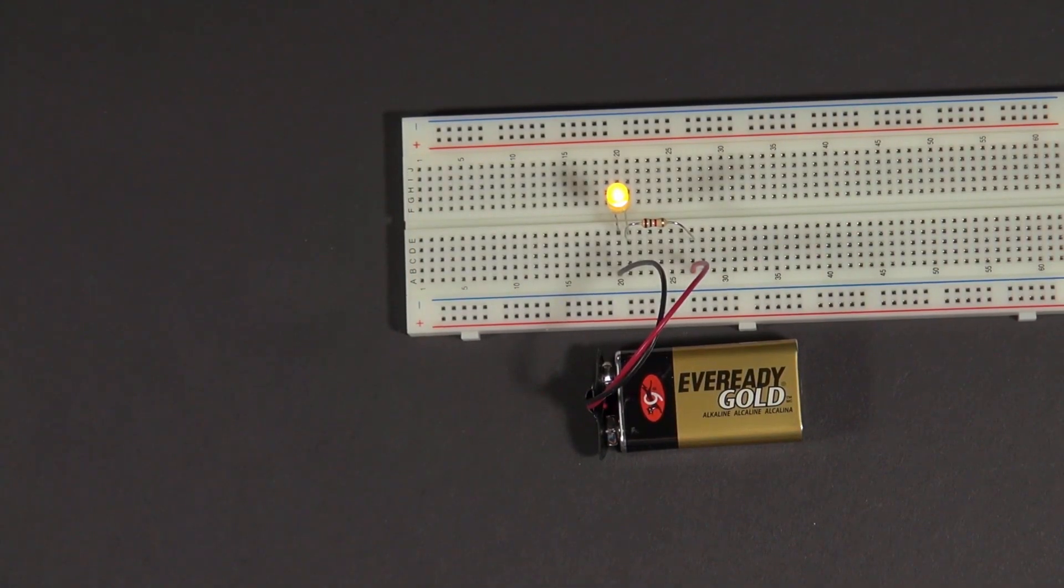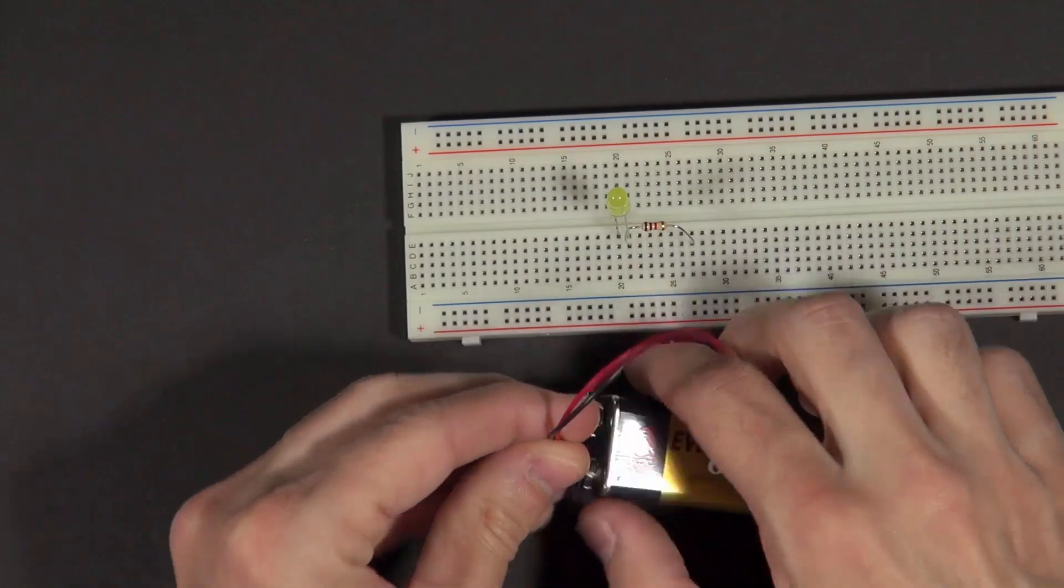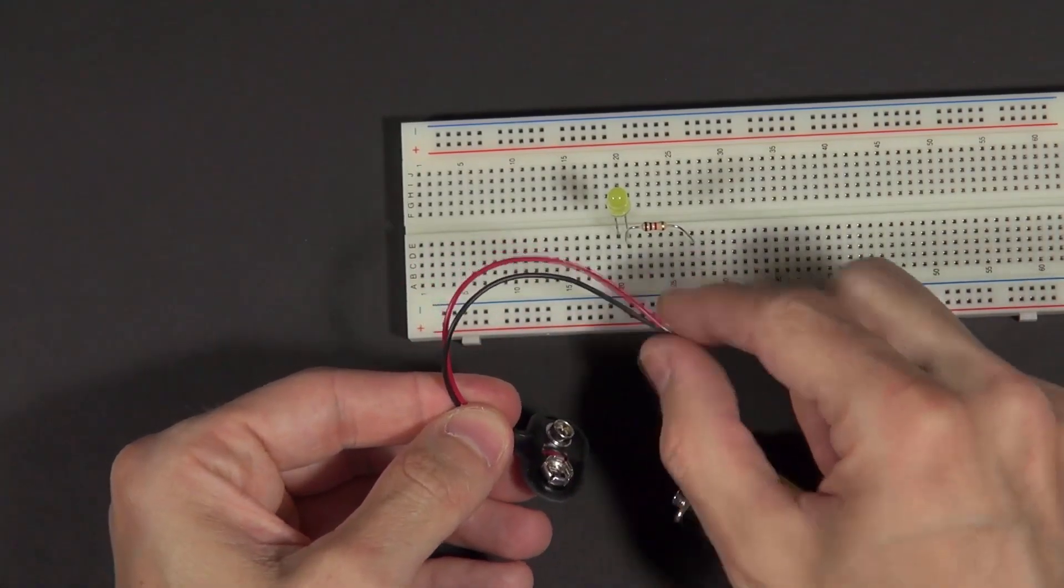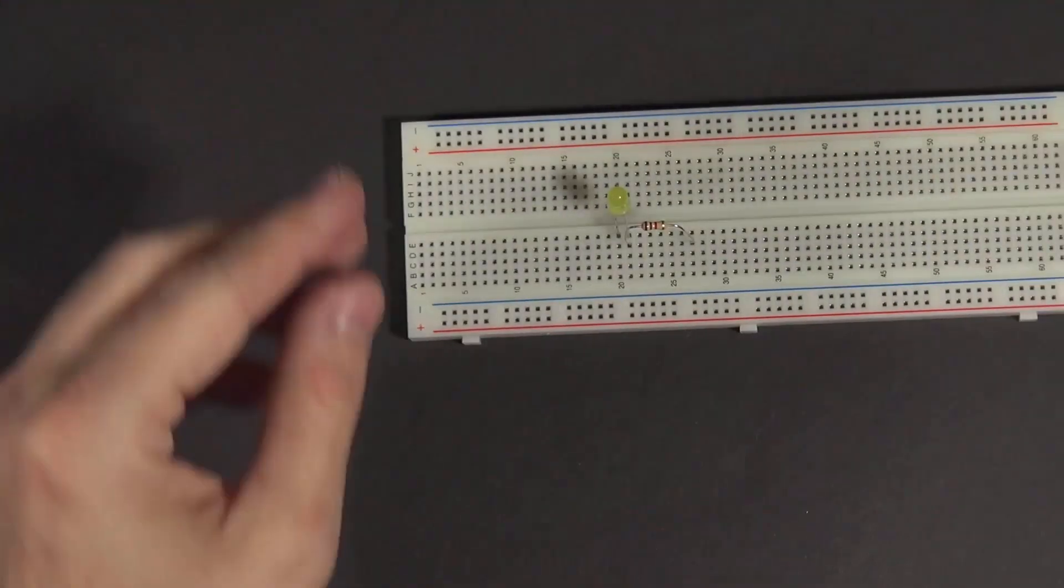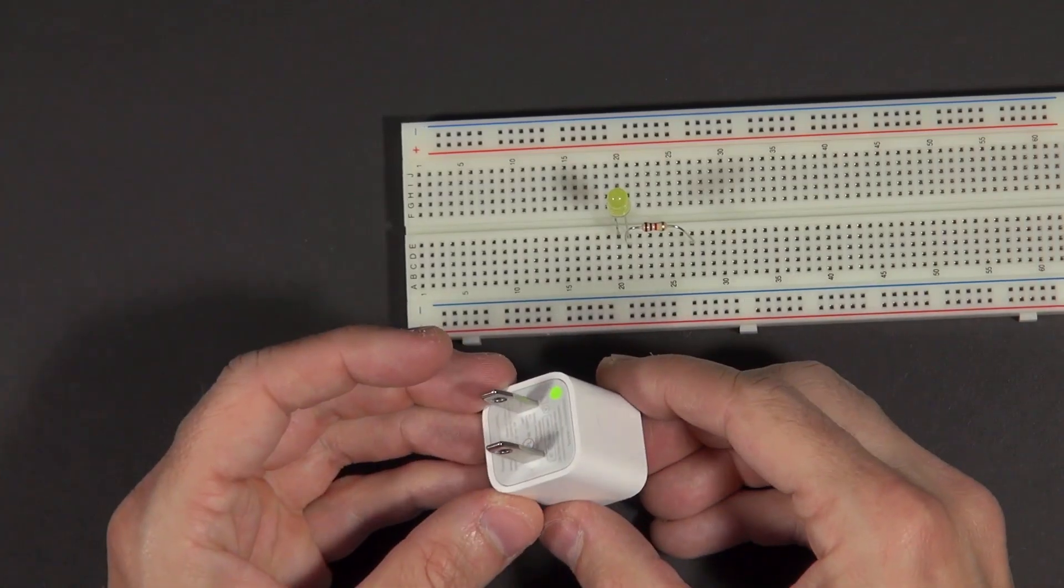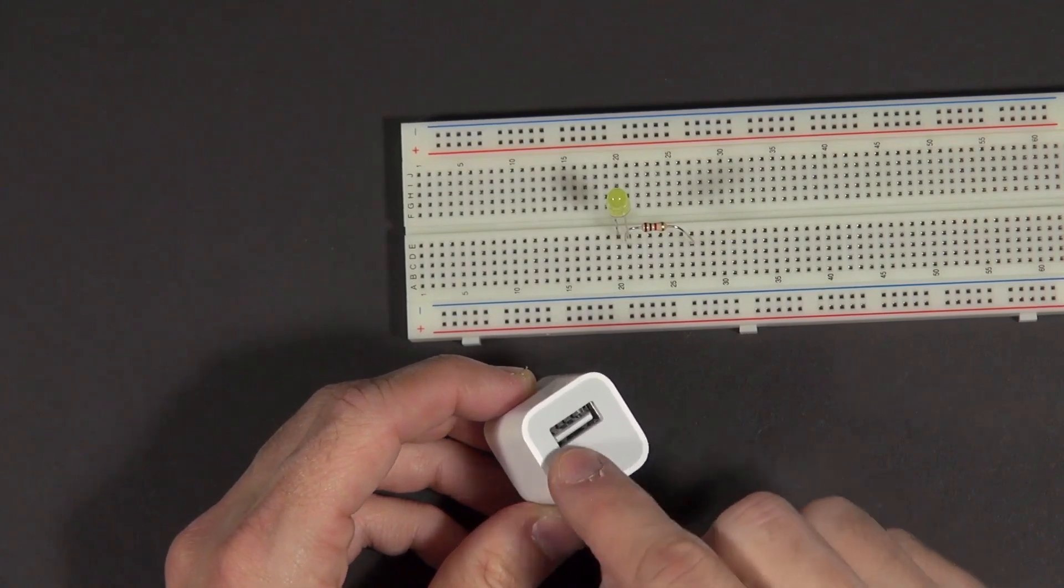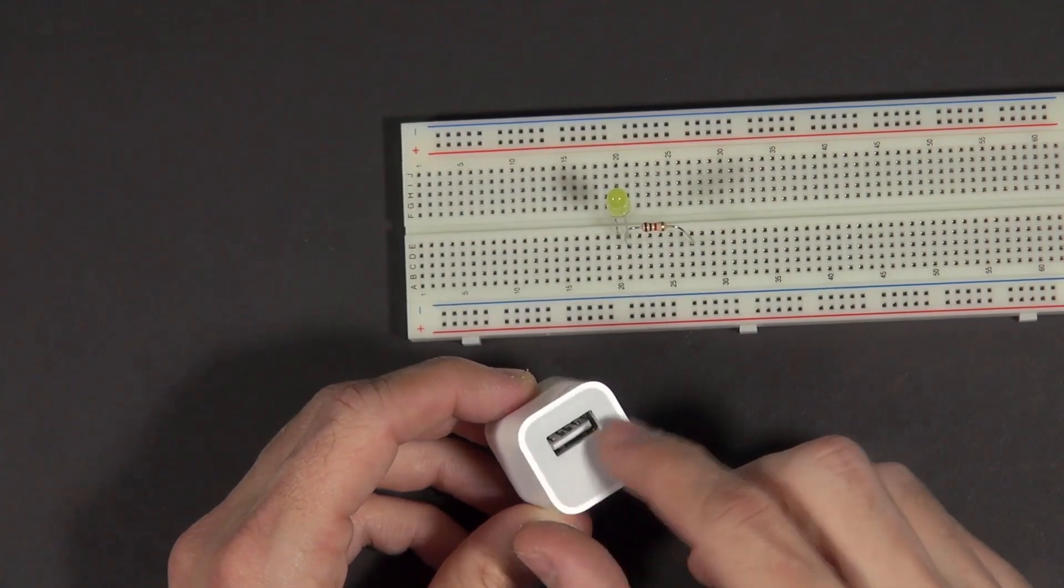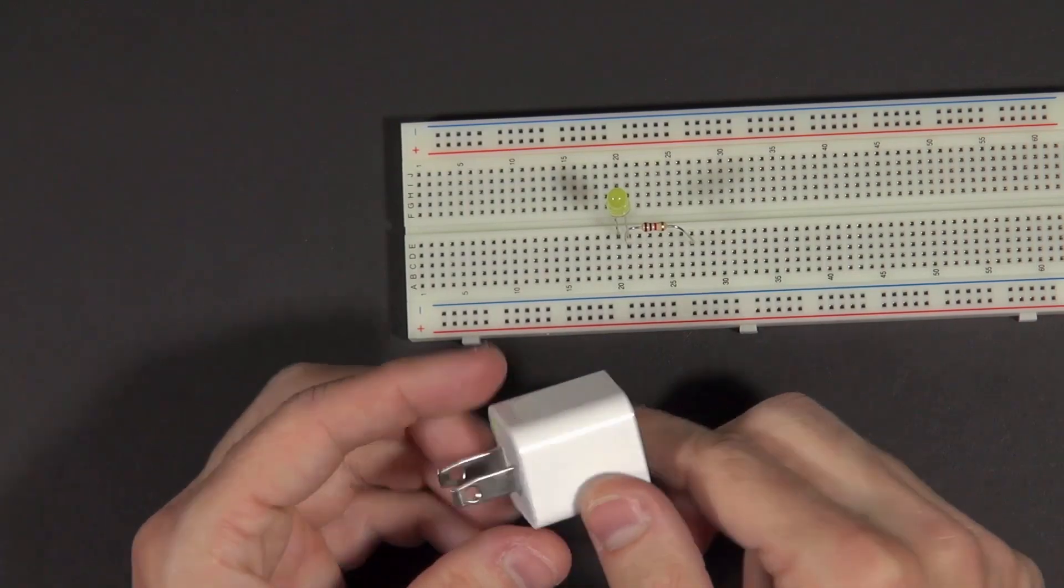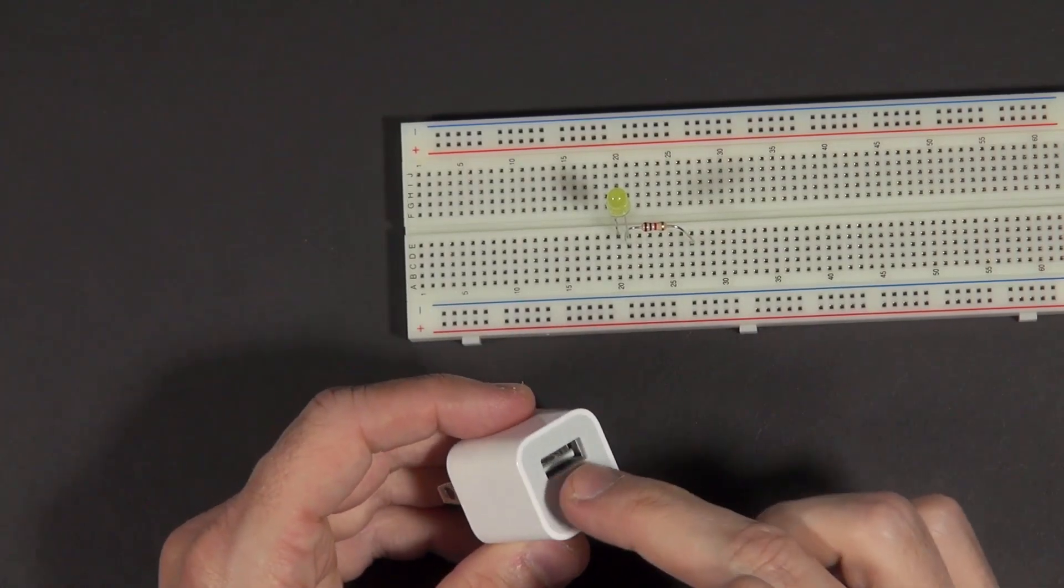Another way that I actually really like is instead of using a battery—one of the things about batteries is that they get used up and you have to buy new ones or recharge them. What I find is convenient, and let me make sure I disconnect this here so that we don't short this and damage the battery, is these little USB chargers. This plugs into the wall, and USB has a 5 volt DC voltage available on it. You can use these things, which you probably might have around the house or you can get relatively inexpensively, and you can get 5 volts out of this.